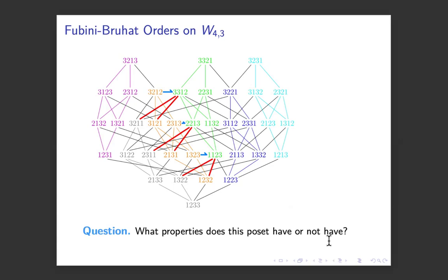So if you're staring at this, maybe I should pause here. What properties does this poset have or not have that would be nice? It does have a unique minimal element, but no unique maximal element. That's too bad. Not much I can do about that. But another thing that it has is it's not a lattice. It doesn't have the property that there's a unique least upper bound and a unique greatest lower bound.